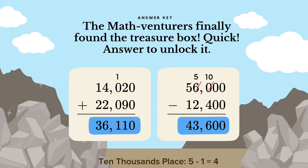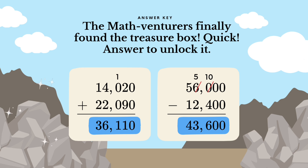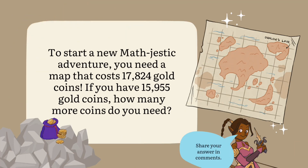Ten thousands place: 5 minus 1 is equal to 4. Final answer: 56,000 minus 12,400 equals 43,600. And that's how you subtract large numbers step by step.